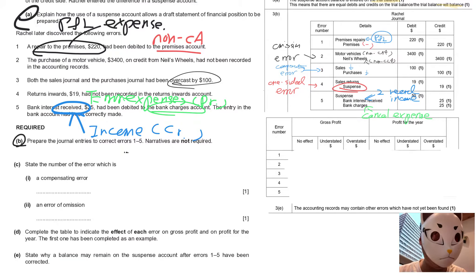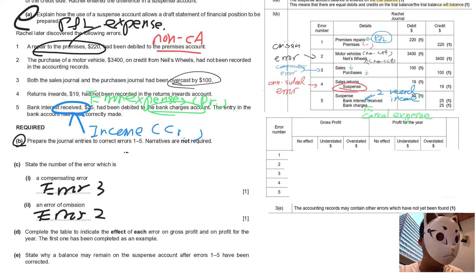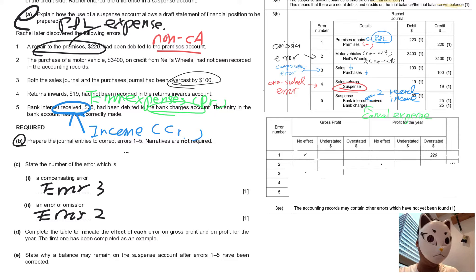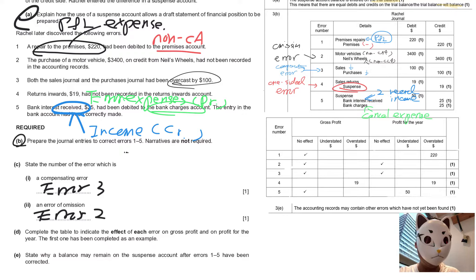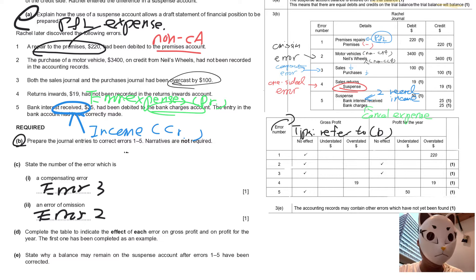For Part C, error 3 and error 2 have been discussed. For Part D, we have to complete the table about gross profit and profit for the year. The tip is to refer to Part B journal entries — use them to determine the effect on profit rather than thinking it through from scratch each time.